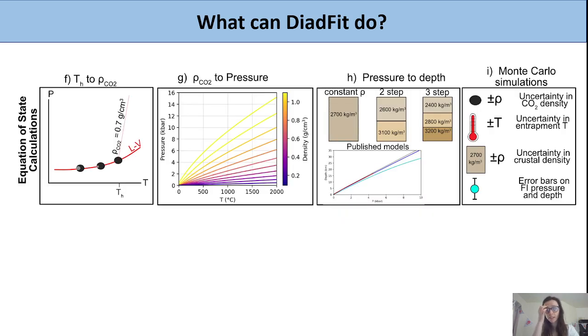We have built in two CO2 equation of state models: Spann and Wagner of 1996 and Sterner and Pitzer 1994. This allows you to do workflows like convert homogenization temperature to CO2 density for microthermometry. You can loop through and do hundreds of calculations in a spreadsheet within milliseconds.